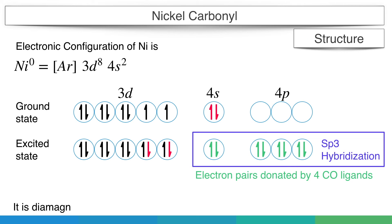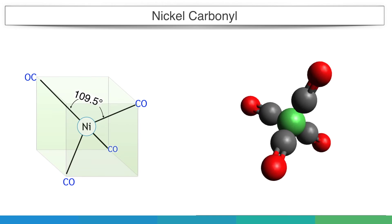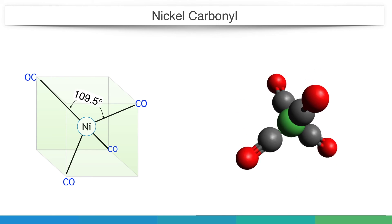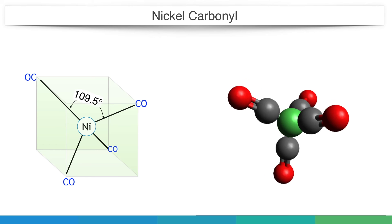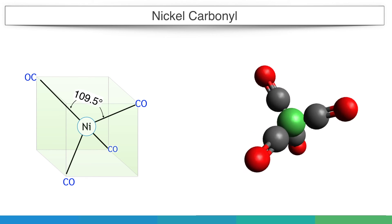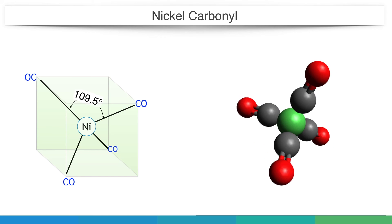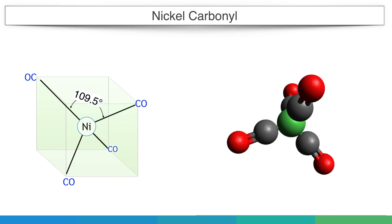As all the electrons are paired, the molecule is diamagnetic in nature. Since sp3 hybridization takes place, it should be tetrahedral in geometry. This geometry is confirmed with electron diffraction data. Nickel tetracarbonyl has a tetrahedral structure with nickel at the center and 4 carbon monoxide groups at the 4 corners of a regular tetrahedron.